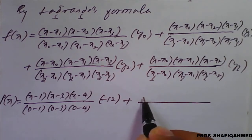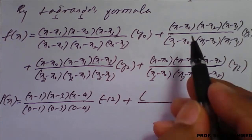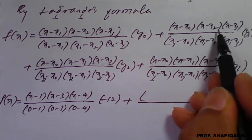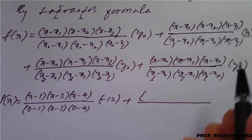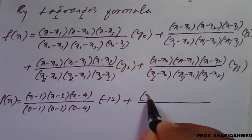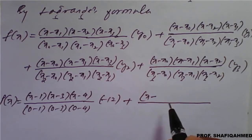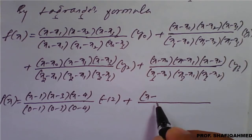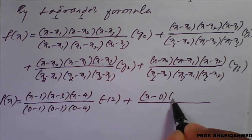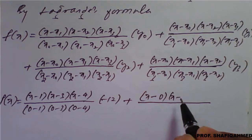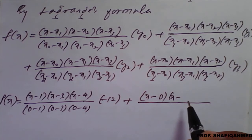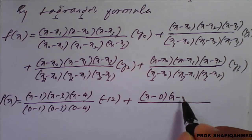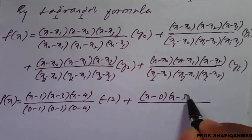The second term: (X minus X naught)(X minus X2)(X minus X3), so X minus 0 is X, X minus X2 is 3, X minus X3 is 4, divided by the denominator terms.